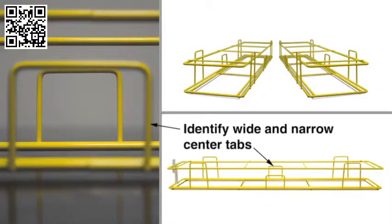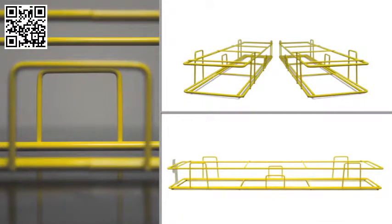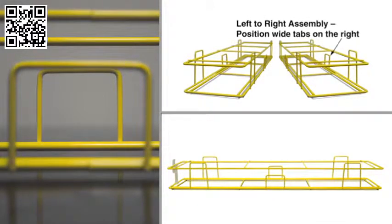Rack frames can be assembled from left to right or from right to left. Locate the center tab on either side of the rack frame. The tab on one side is wider than the tab on the other.